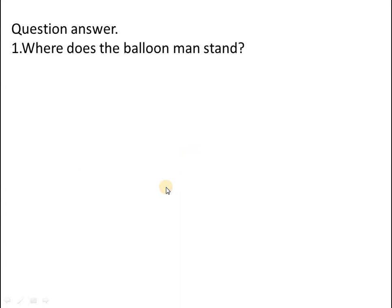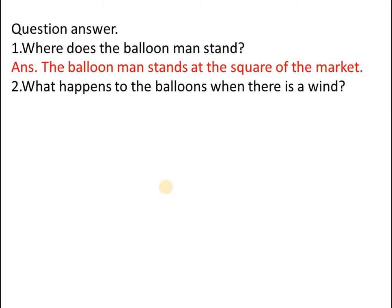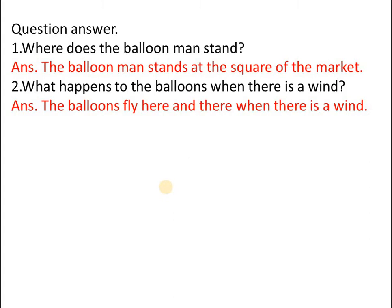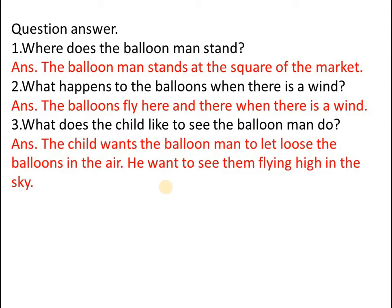Now some question answers. First, where does the balloon man stand? The balloon man stands at the square of the market. Second, what happens to the balloons when there is a wind? The balloons fly here and there when there is a wind. Third, what does the child like to see the balloon man do? The child wants the balloon man to let loose the balloons in the air and see them flying high in the sky.